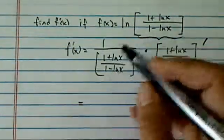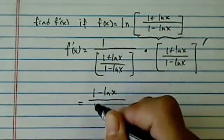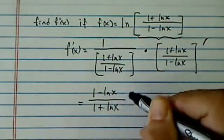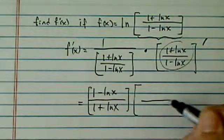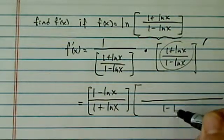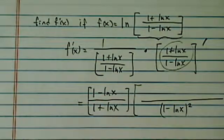So what we're going to do here is we're going to flip it. So 1 minus natural log of x on top, 1 plus natural log of x on the bottom. So this part is complete. Now here we have a quotient here. So let's set it up again. 1 minus natural log, this one is going to be squared on the bottom.